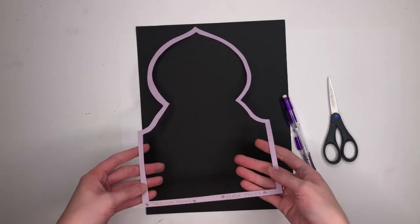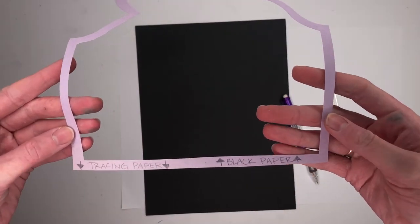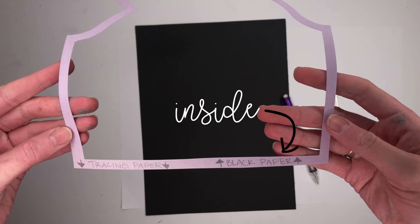Next you need a black sheet of paper and the same stencil you used before, but we're going to trace the inside of the stencil this time.